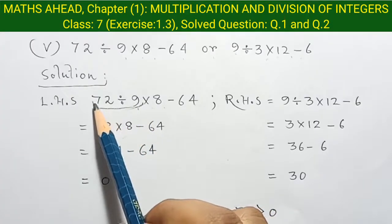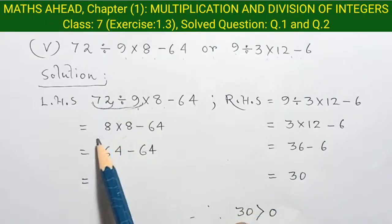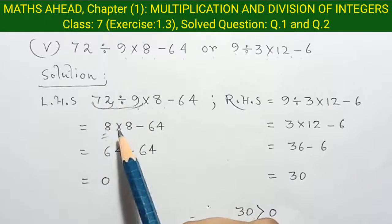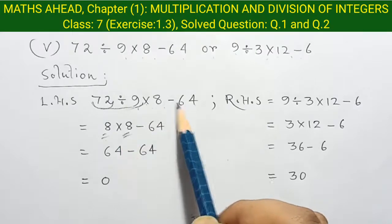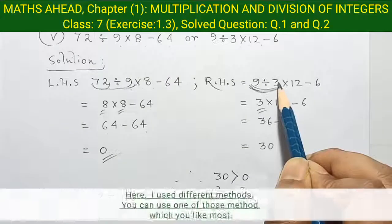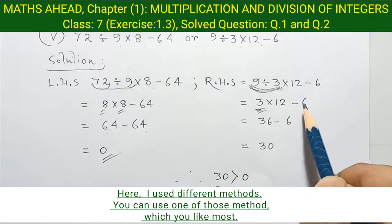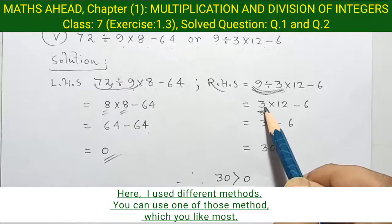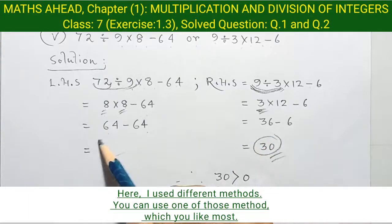At first, we divide 72 by 9 and the answer is 8, and multiply by 8 gives minus 64. So 64 minus 64, finally result is 0. So 9 divided by 3 equal to 3, into 12 minus 6: so 3 into 12 plus 36, minus 6 equal to 30. So 30 is greater than 0.